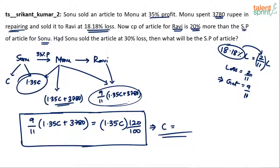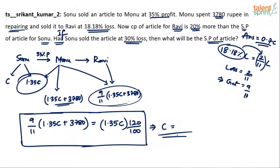The final answer is not C itself. The question asks: had Sonu sold the article at 30% loss, what would be the selling price? C is Sonu's cost price. If he sells at 30% loss, he loses 30% and gets only 70% of C. So the selling price will be 0.7C. Solve for C first, then take 0.7C to get the required answer.